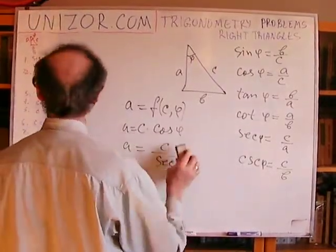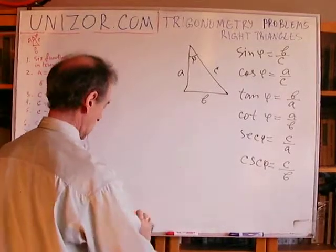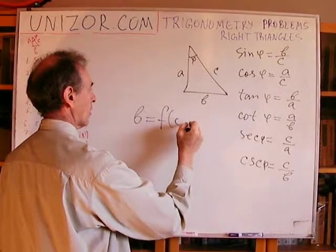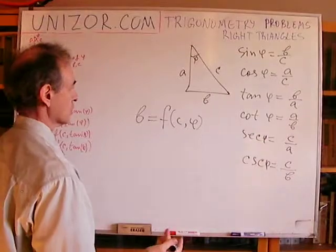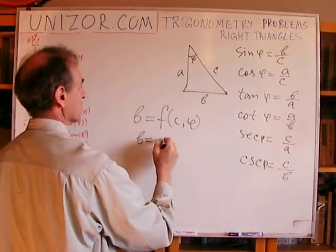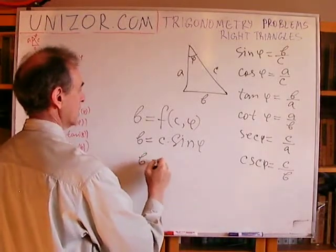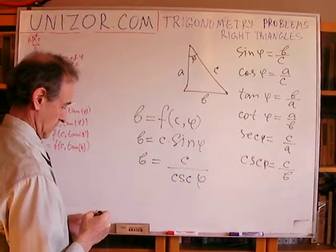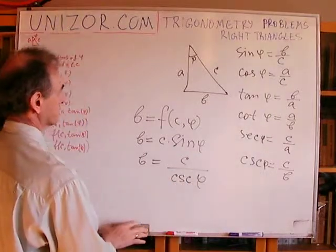Now the other catetus: express B in terms of hypotenuse C and angle phi. We use the formula involving B, C, and phi. From the sine formula, B equals C times sine of phi. Or from the cosecant formula, B equals C over cosecant of phi. Again, these are completely equivalent because cosecant is one over sine.